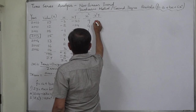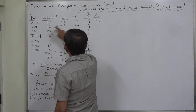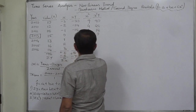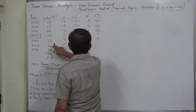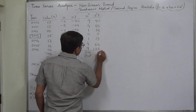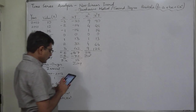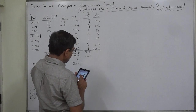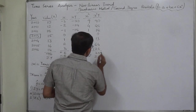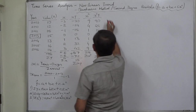Now for the x squared times y column: 9 times 10 is 90; 4 times 12 is 48; 1 times 18 is 18; 0 times anything is 0; 1 times 13 is 13; 4 times 16 is 64; 9 times 14 is 126. The total sigma x squared y comes to 359.